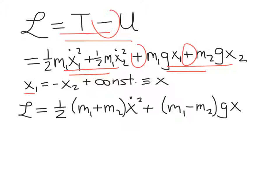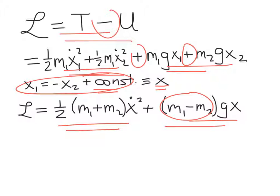Recall that x1 is just equal to minus x2 plus some constant. We'll just call all of that x and ignore the constant. And so now we're going to make the replacement. We're going to replace our velocities using this relationship here and change our potential energies. And so you get a final expression for the Lagrangian in terms of x. Here's the kinetic energy. And now we're just adding up the masses here in this parentheses. Here's our potential energy. And now we're taking a difference between the masses because x1 and x2 are different by a minus sign.